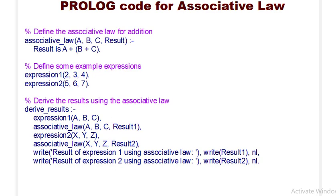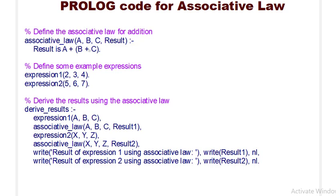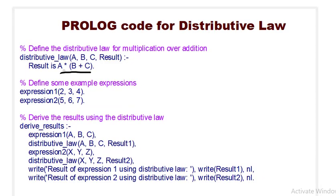Similarly, we have the distributive law code. The same structure applies — the only difference is the operation. Instead of A plus B plus C, here we compute A into B plus C, to demonstrate the distributive law. Everything else in the code structure remains the same.